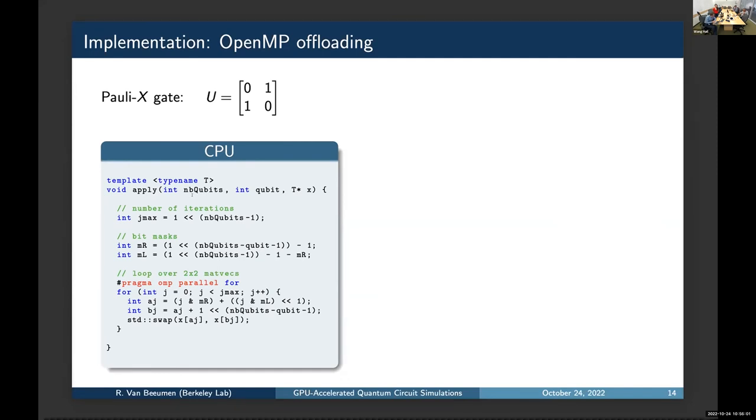So, let's have a closer look to the CPU implementation. What we take as input is the total number of qubits, which qubit the gate is acting on, and then a pointer to the state vector. We just define the maximum number of J values. Then we define the left and right bit masks, just do some bit operations. And then we have one loop, where in each iteration of the loop, we calculate the indices a_j and b_j, and then we just perform a simple swap operation. And we use the pragma statement here to do the loop unrolling.